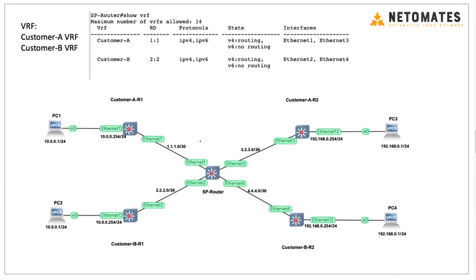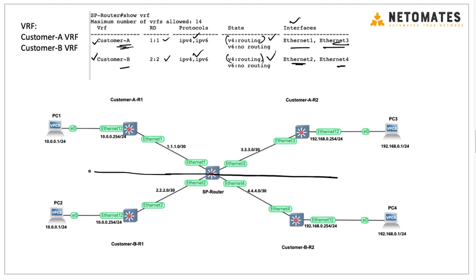After configuring VRF and routing, let's verify. The 'show vrf' command shows all created VRFs — Customer A and B — along with their RD values and supported protocols. Currently we're only using IPv4, so routing is enabled. You can also see which interfaces are part of each VRF: Ethernet 1 and 3 for VRF A, and Ethernet 2 and 4 for VRF B. This confirms the topology has been divided into two separate customer parts.